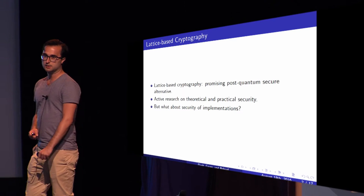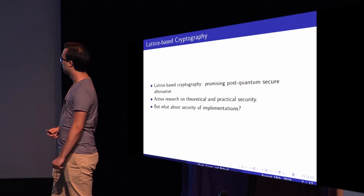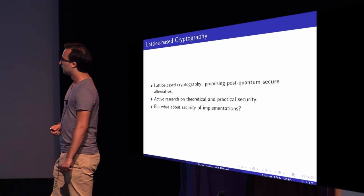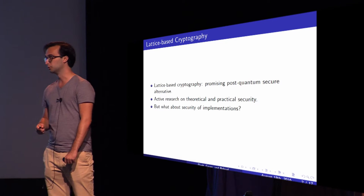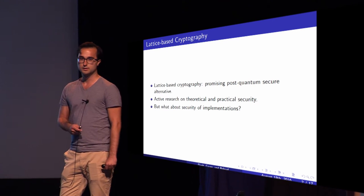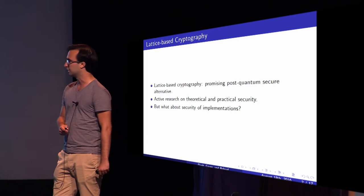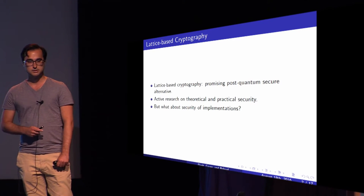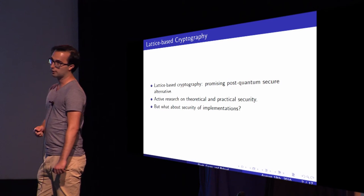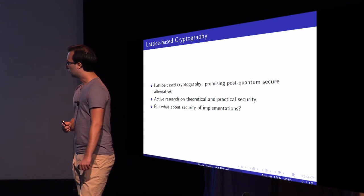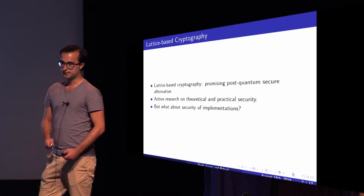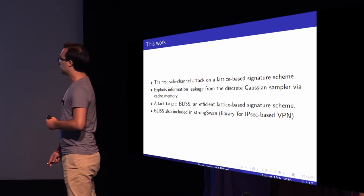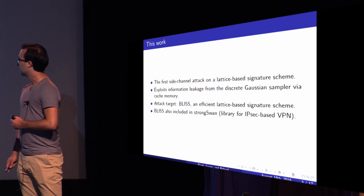This work is based on lattice-based cryptography, which is a very promising post-quantum secure alternative to the systems we use today. The key sizes are small enough to be practical, and the ciphertext and signatures are of a reasonable size. There is a lot of active research on theoretical and practical security, and more implementations are available. So what about the security of these implementations? This work tries to answer that question by presenting the first side-channel attack on a lattice-based signature scheme.